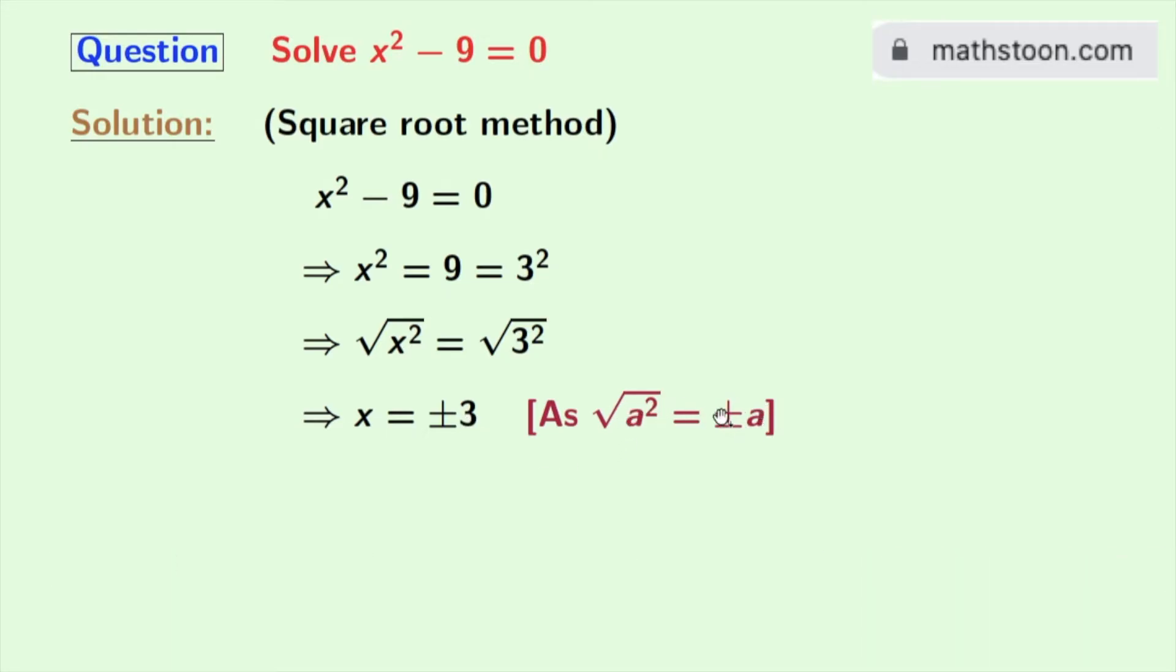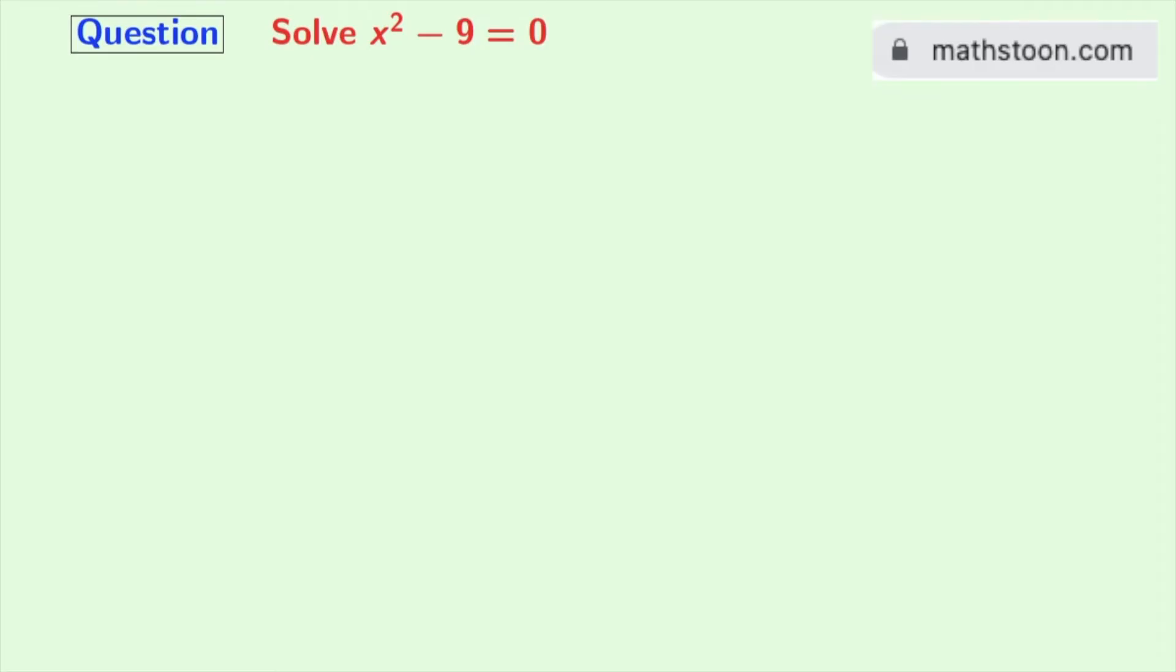Where a is 3, so x = 3 and -3 are the solutions of x² - 9 = 0. Now we will again solve this equation using another method, which is the factorization method.